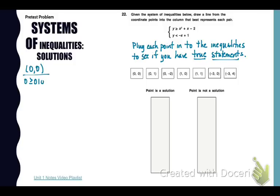So our first point (0,0). When I plug it into my first inequality I get 0 is greater than -2 which is true. And my second one I get 0 is less than 1 which is also true. So (0,0) is a solution.